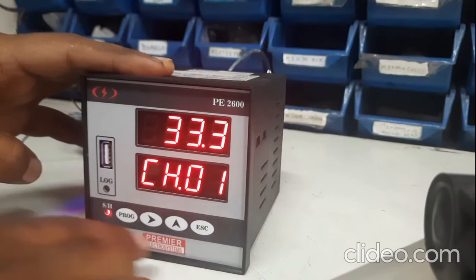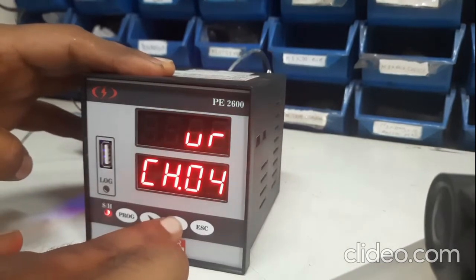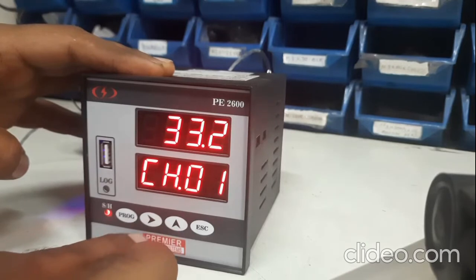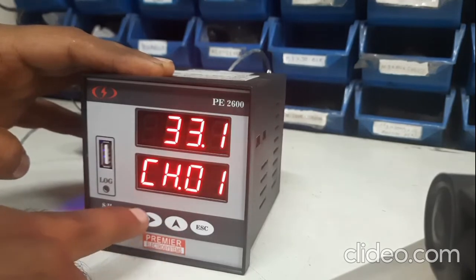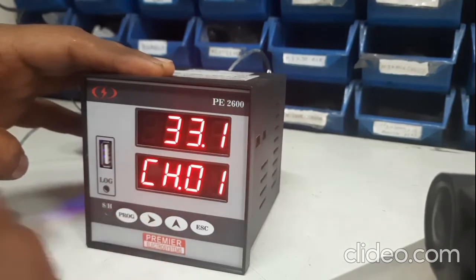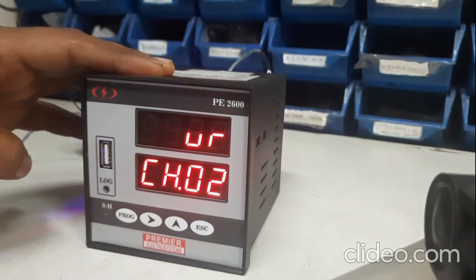You can view all the channels over here. This is the manual scrolling mode. If you want to activate the auto scrolling mode you can just press the right key, which will activate the auto scroll mode.